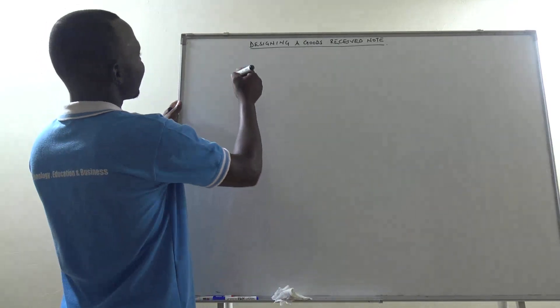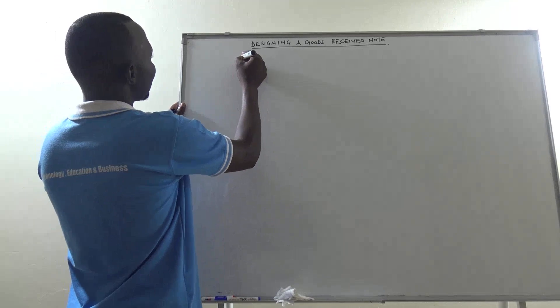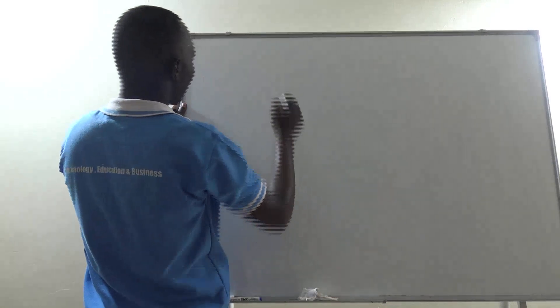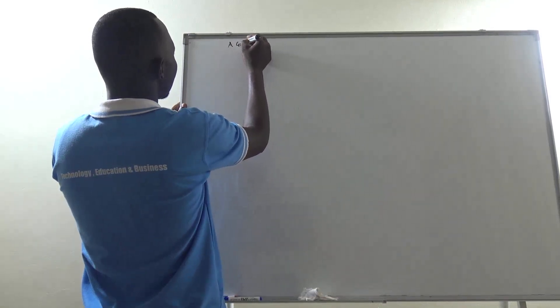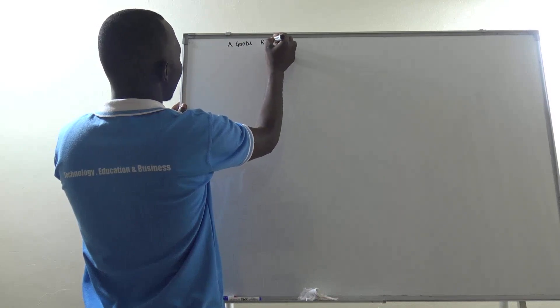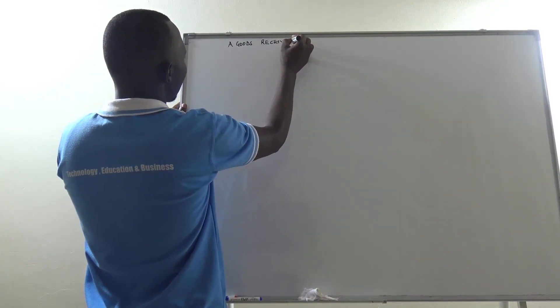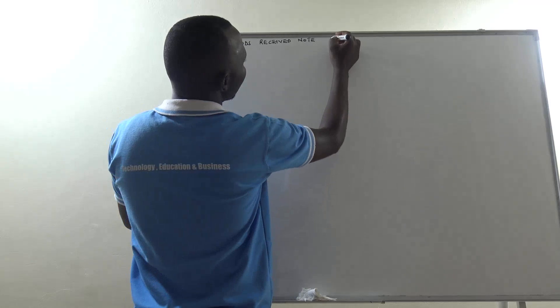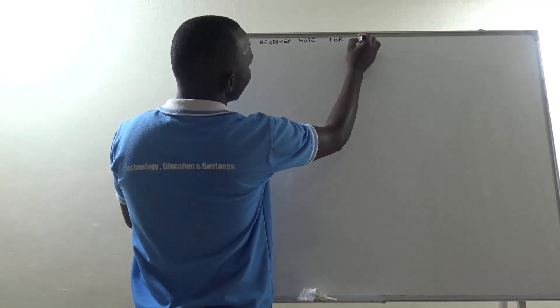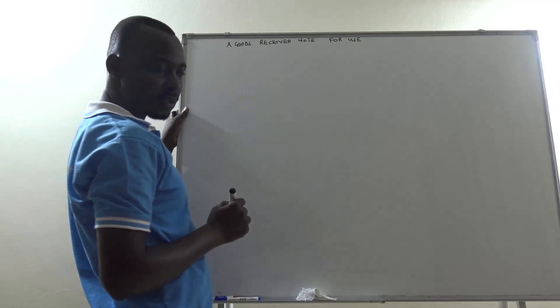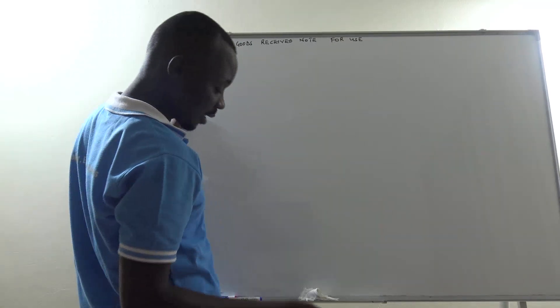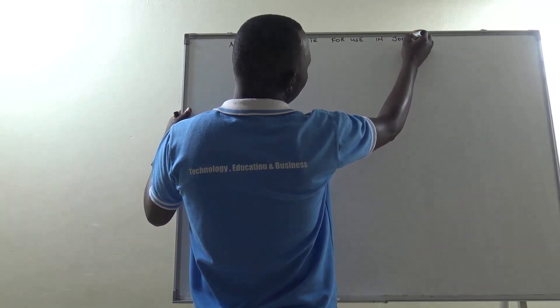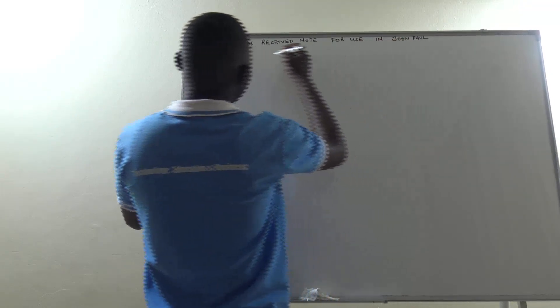As we said, the heading is a must. A goods received note. For use, you can say for use in the business, or you can even mention the name of that business. For use in John Paul general merchandise.